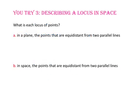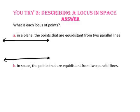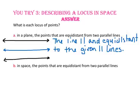Pause the video and do U-try number 3. What is each locus of points? For part A, in a plane, the points equidistant from two parallel lines — the set of equidistant points would be a line parallel to those lines, halfway between them. For part B, in space, the points equidistant from two parallel lines — using part A to help, the set of points equidistant from both lines in space is a plane that is halfway between those parallel lines.